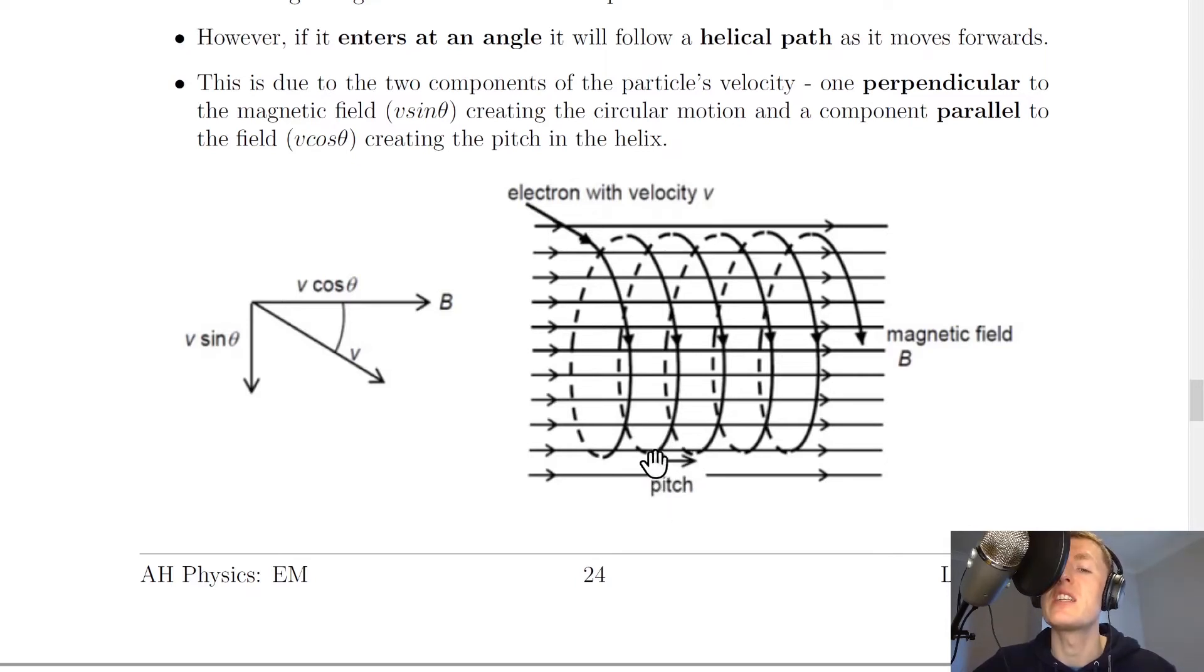And what we mean by the pitch in the helix is the distance between two adjacent points, like the distance between the bottom of this circular part and this circular part. We've also got a perpendicular component of the velocity, which is this v sine theta, and this one is creating the circular motion that we see. And what we end up with as a result of these two things is that the electron will travel in this helical motion.